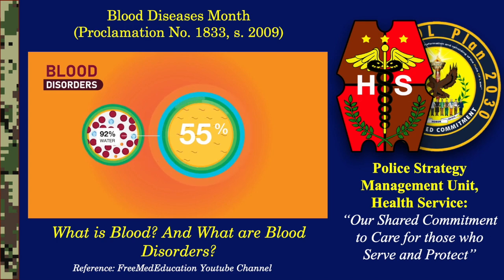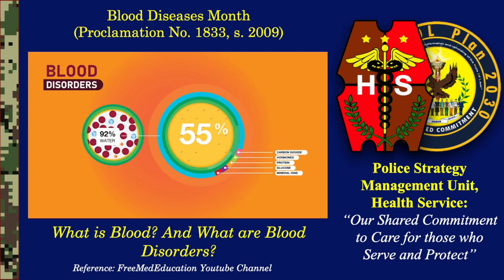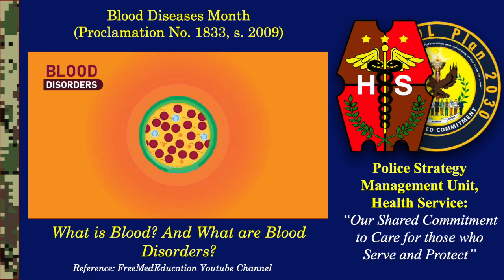Plasma also contains dissolved proteins, glucose, mineral ions, hormones, and carbon dioxide. All the blood cells' families work together and maintain your body so that you are healthy and strong.